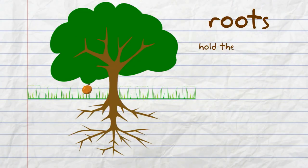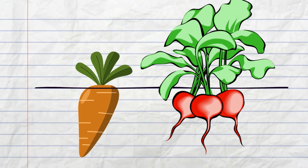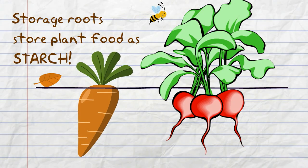The roots of a plant hold the plant firmly to the ground. The root hairs absorb water and minerals that the plant needs from the soil. Some roots are storage roots where plant food is stored as starch.